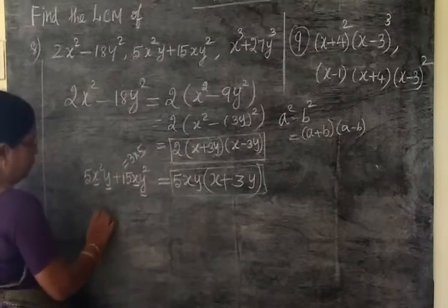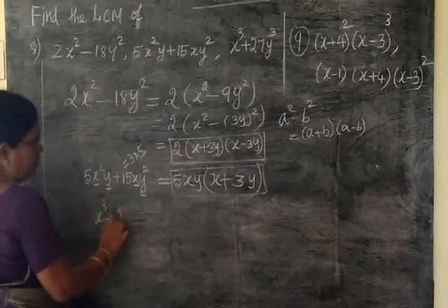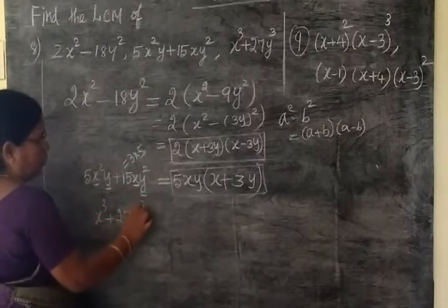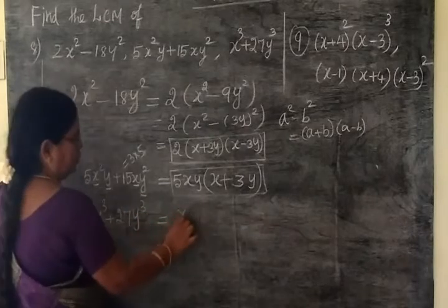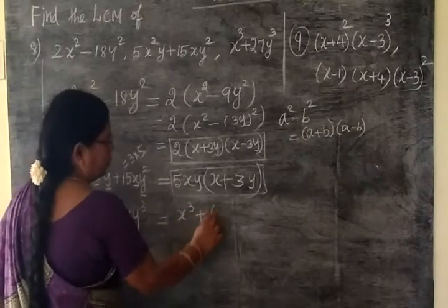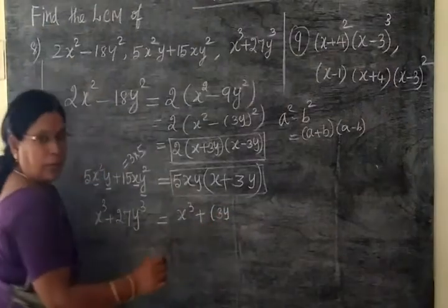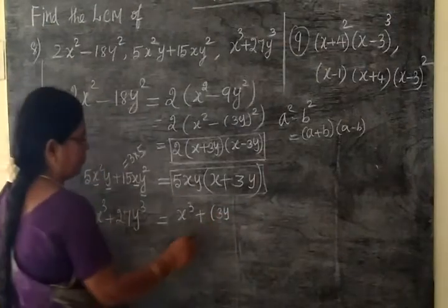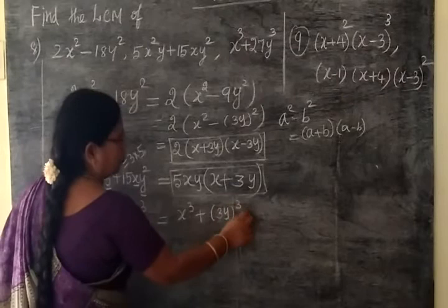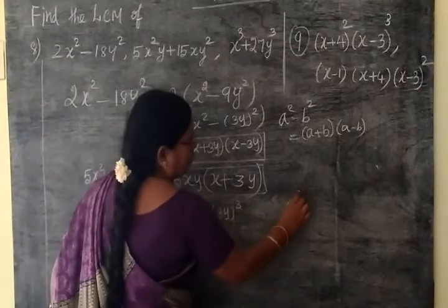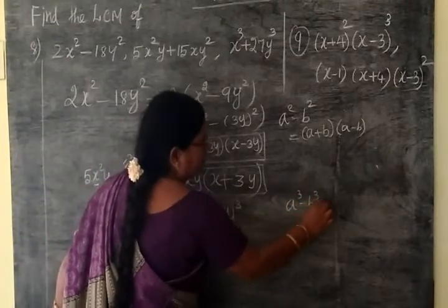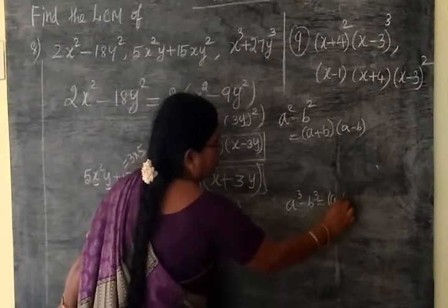Next, we are writing x³ + 27y³. This is equal to x³ + 27 can be written as 3 × 3 × 3, so (3y)³. And we know the factors: a³ + b³ is equal to (a + b)(a² - ab + b²).